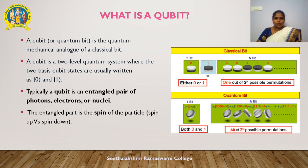Today's computers use a stream of electrical or optical pulses representing ones or zeros called bits. Everything from tweets and emails to songs and videos are essentially long strings of these binary digits. Quantum computers, on the other hand, use qubits, which are typically subatomic particles such as electrons or photons. A qubit is defined as the mechanical analog of a classical bit — a two-level quantum system where the two basis states are written as |0⟩ and |1⟩. Typically, a qubit is an entangled pair of photons, electrons, or nuclei.